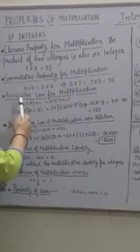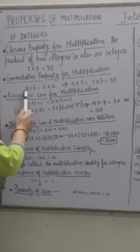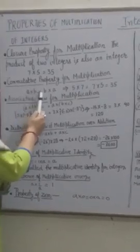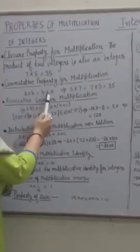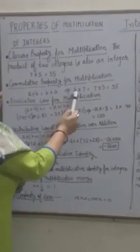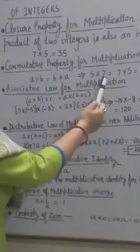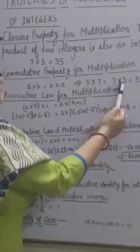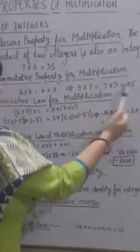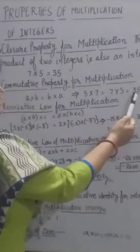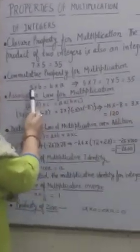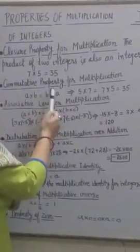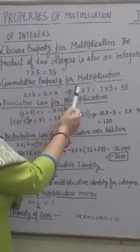The second property is the commutative property for multiplication. If A and B are both integers, then A × B = B × A. For example, 5 and 7 are integers: 5 × 7 = 35 and 7 × 5 = 35. Both products are the same, so A × B = B × A.